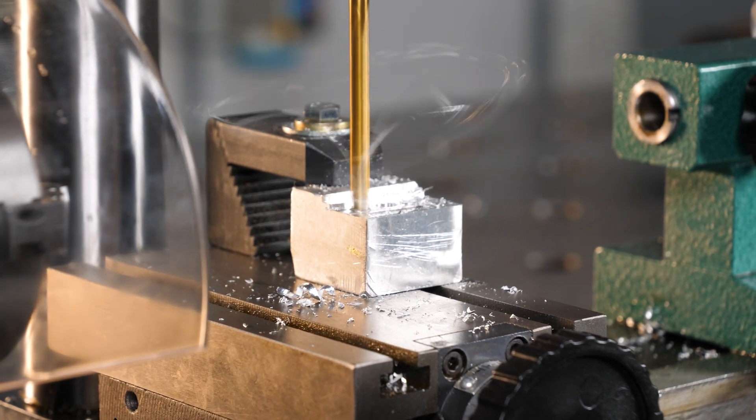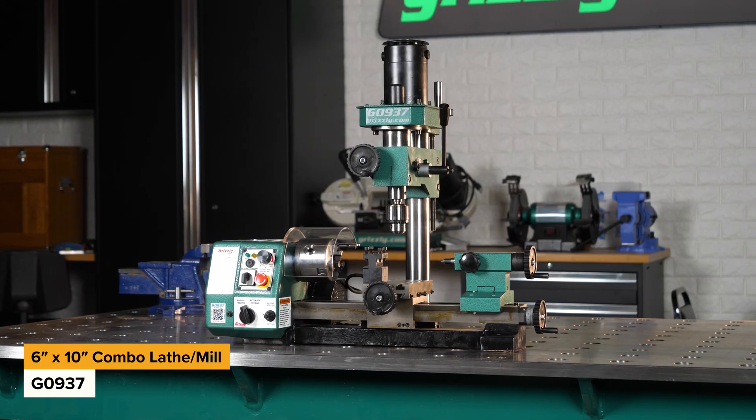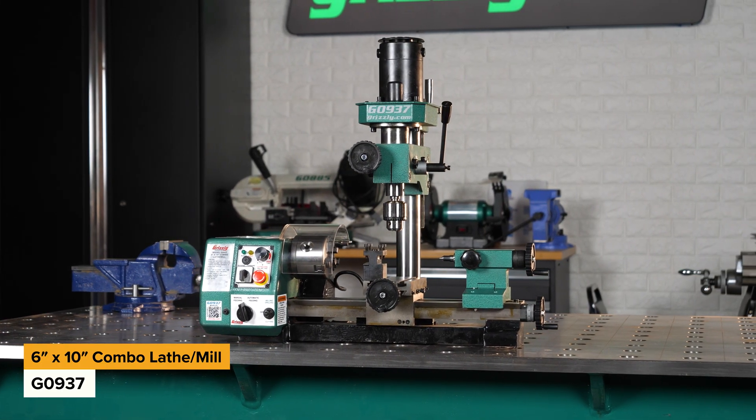The ultimate tool for precision machining in your workshop. Introducing the Grizzly G0937 6 x 10 inch combo lathe and mill.